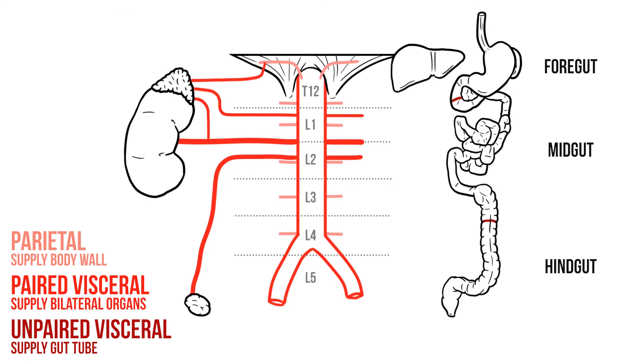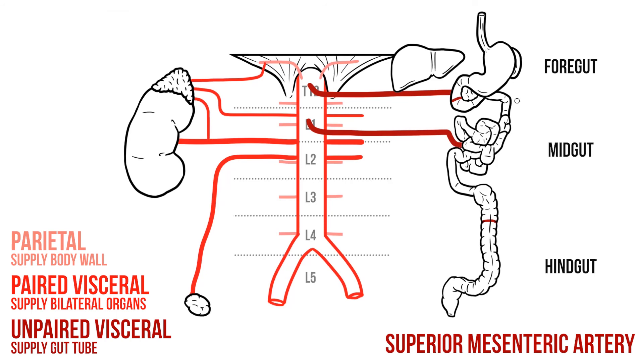So coming off at T12 just below the diaphragm, the celiac axis passes to the foregut. The superior mesenteric artery supplies the midgut and leaves the aorta at L1. The hindgut meanwhile receives most of its blood from the inferior mesenteric artery, and this originates at L3.